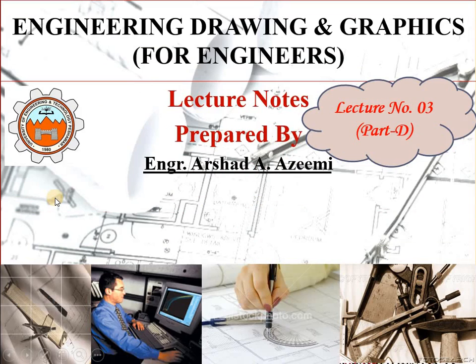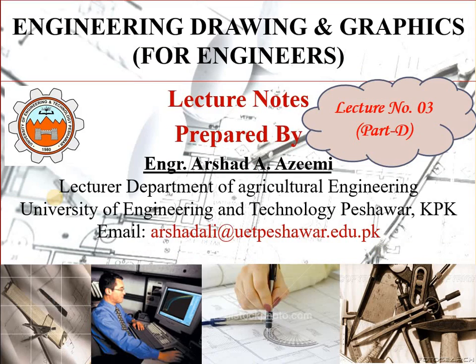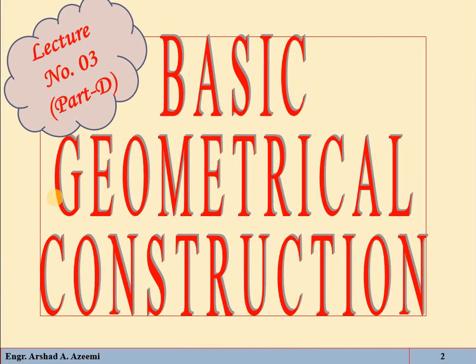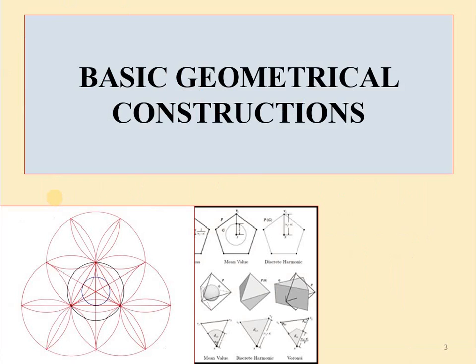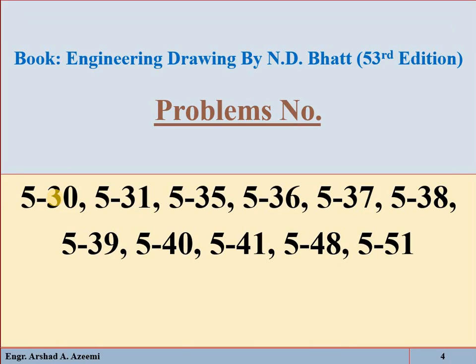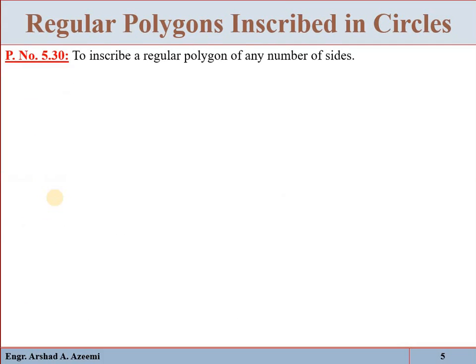Welcome to the fourth part of lecture number three of Engineering Drawing and Graphics for Engineers. In this third lecture, we are discussing basic geometrical construction — how some basic geometrical shapes of plane geometry will be constructed in engineering drawing. In this part D, we will solve different problems from the engineering drawing and graphics book, 53rd edition by N. D. Batt. So problem number 5.30: